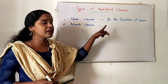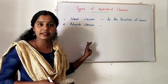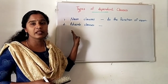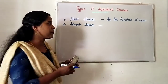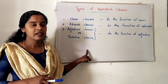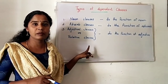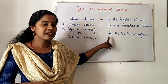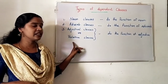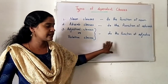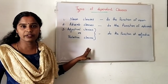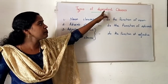An adverb clause performs the function of an adverb in a sentence. The third type is an adjectival clause or relative clause. It performs the function of an adjective in a sentence. So these are the three classifications of dependent clause.